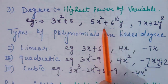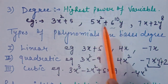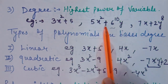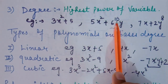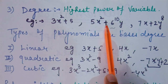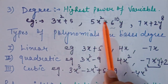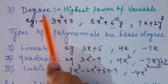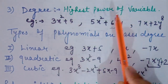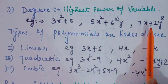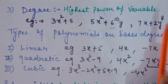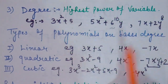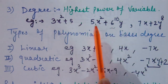In the expression 5x squared plus 6 raised to the power 10 times y, we have two variables x and y with powers 2 and 10. Some students may say the degree is 2, others may say 10. The correct answer is 2 because 6 is a constant, not a variable. We only take the highest power of the variable. Similarly, in 7x plus 2y to the power 10, the degree is 8 because 8 is the highest power of any variable.